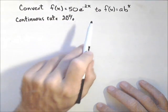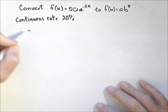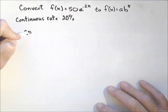Now right off the bat, the initial value is the same in either form, so A is 50 for either of them.